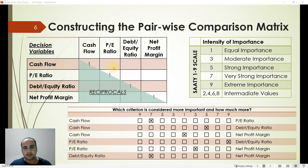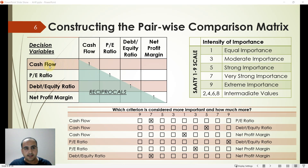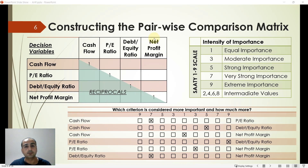Here is our real questionnaire for the stock investment example. The empty slots on the upper side of the diagonal are filled by pairwise comparisons. In the first row, cash flow is compared with PE ratio, debt-equity ratio, and net profit margin. Then PE ratio is compared with debt-equity ratio and net profit margin, and finally debt-equity ratio is compared with net profit margin.